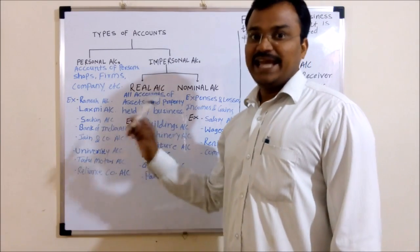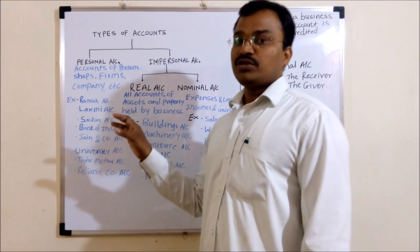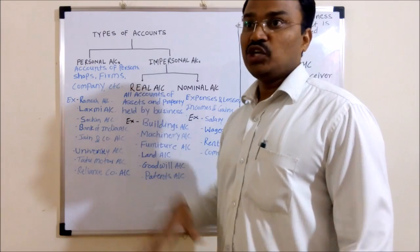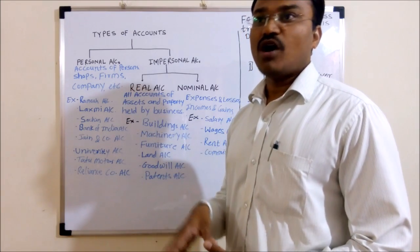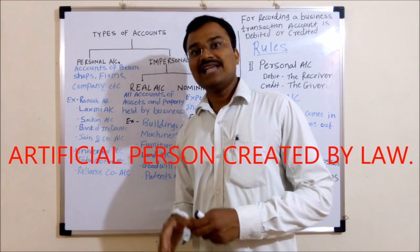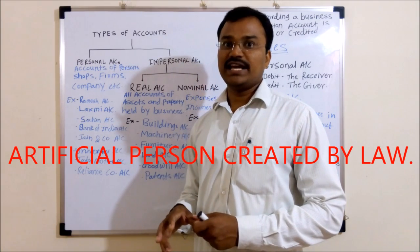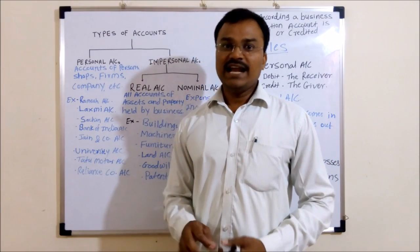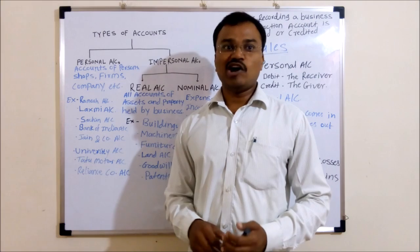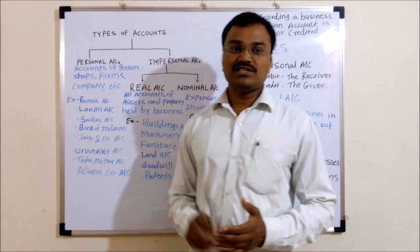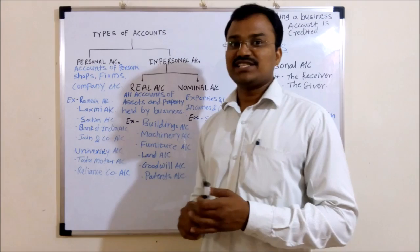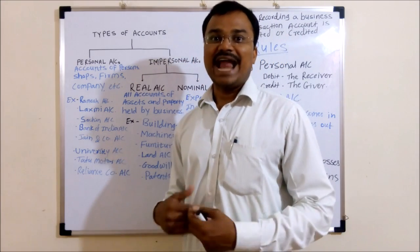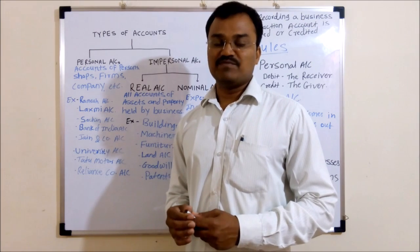These all are examples of personal account. You have to keep in mind that personal account includes all accounts of individual persons as well as artificial persons created by the law. Individual person means natural persons. Artificial persons created by law — examples are firms, companies, institutions, etc. These are known as artificial persons because they can carry out transactions on their own names.